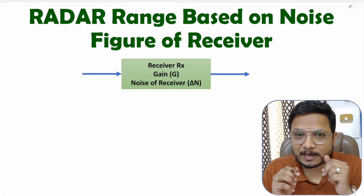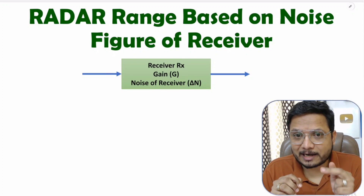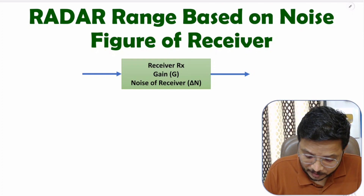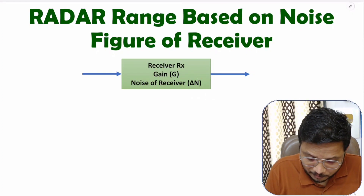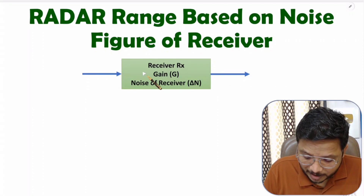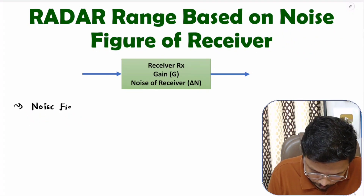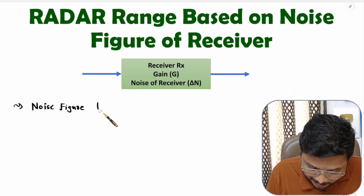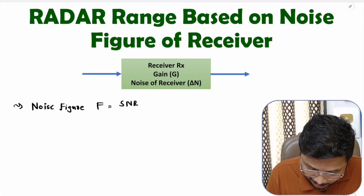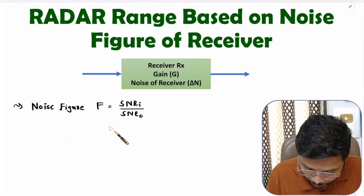Noise figure is SNR at input divided by SNR at output. With the receiver we need to identify signal-to-noise ratio at input divided by signal-to-noise ratio at output — that is noise figure. It is denoted by F, and that is SNR at input divided by SNR at output.